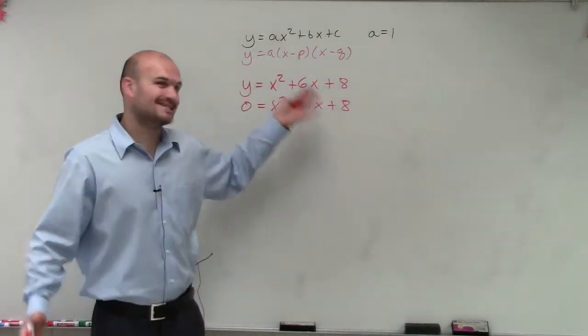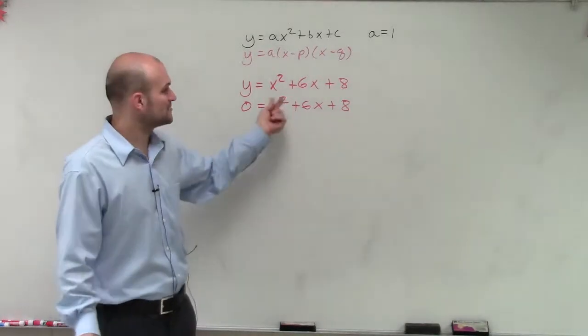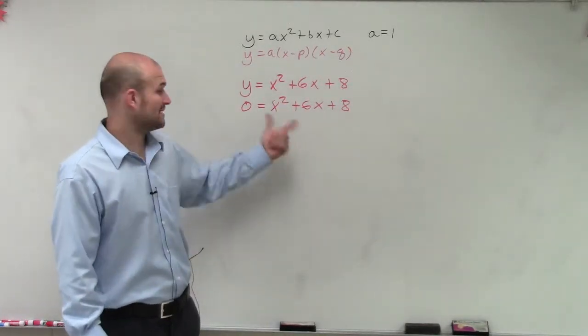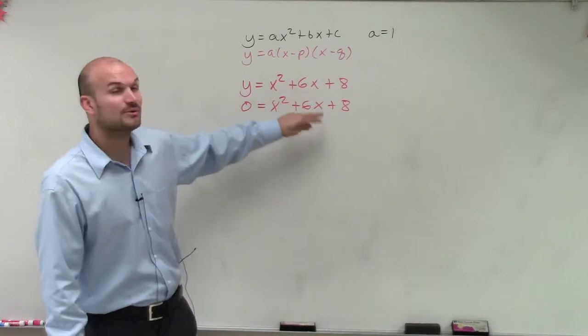Now we can't just isolate the variable and get it by itself, because we have two variables and they're not like terms, so we can't combine them. We have an x squared and an x.